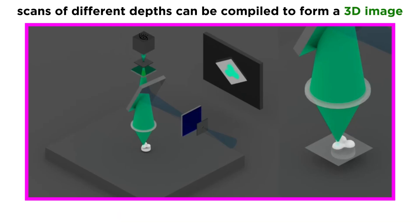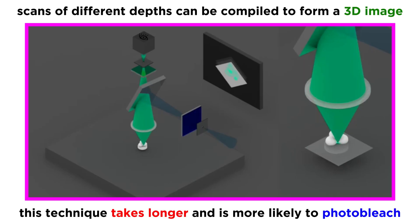The precision of confocal microscopes are so advanced that scientists can even scan different depths of a sample and compile the images into a 3D image. Although this precision does have its trade-offs, as the creation of the image with the confocal microscope does take longer and is more likely to photobleach or destroy samples in the imaging process.